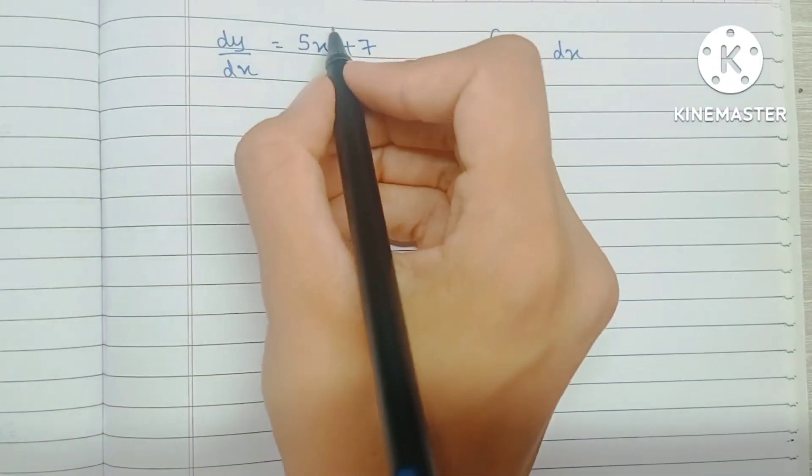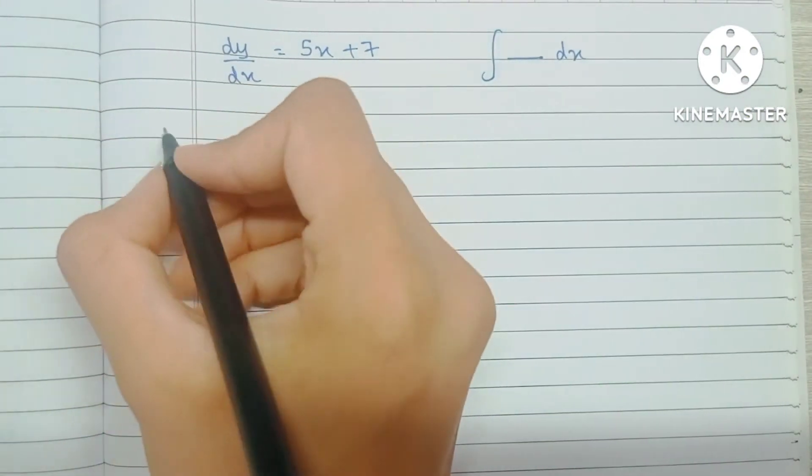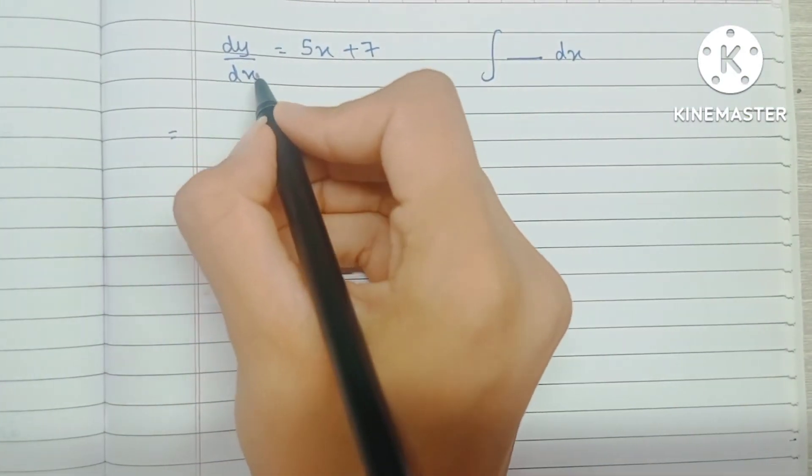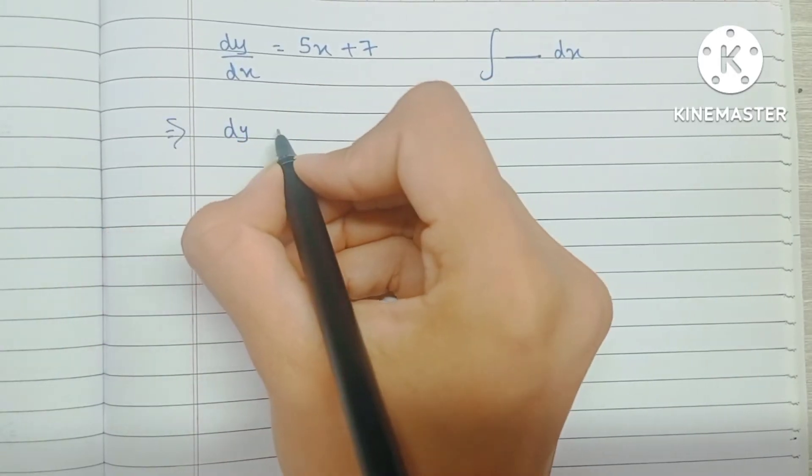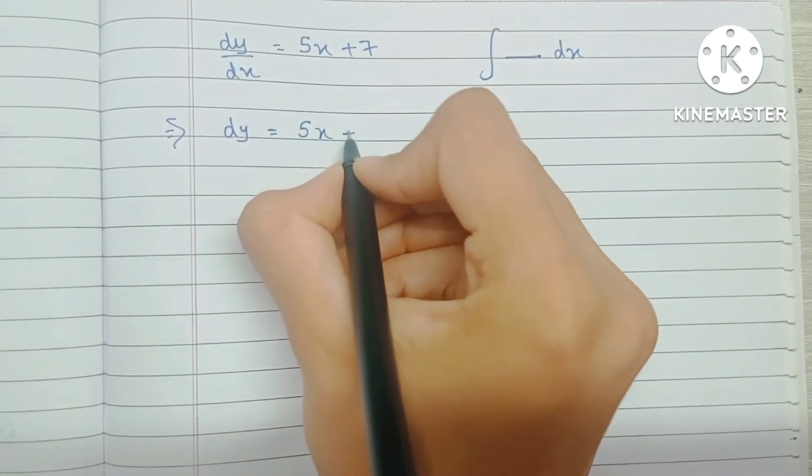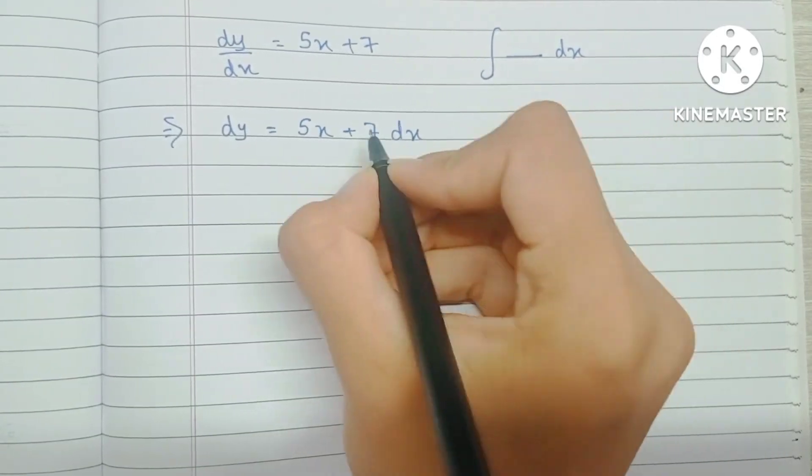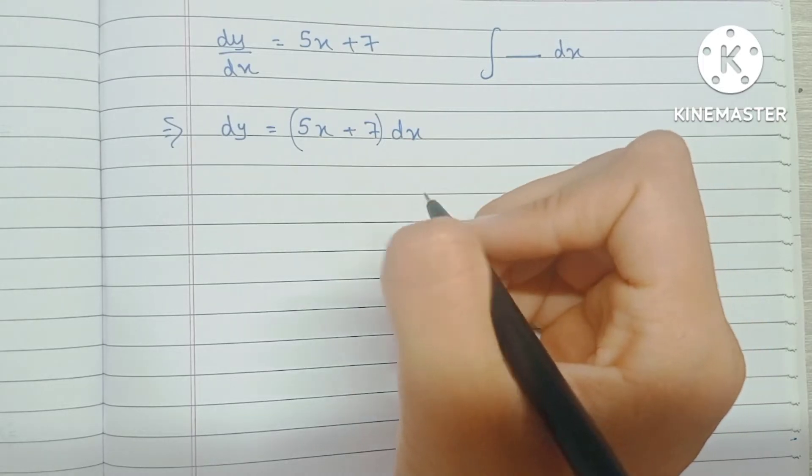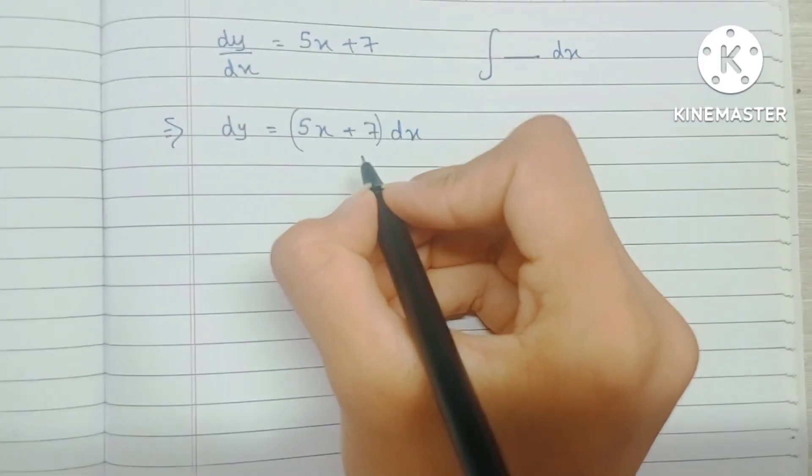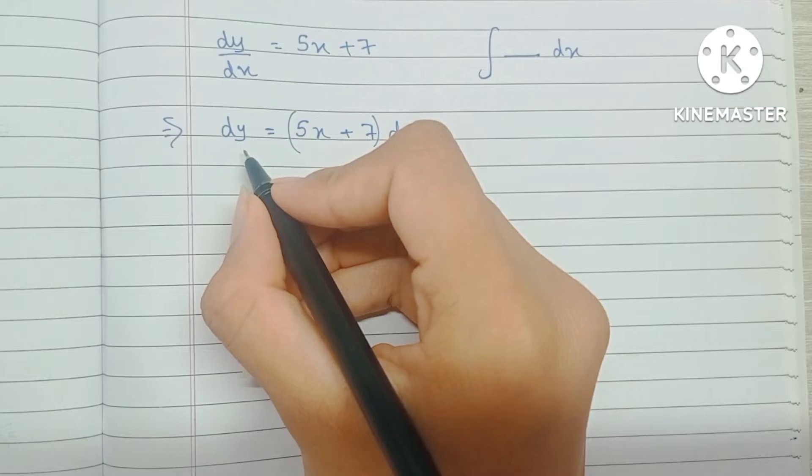So before integrating both sides of this equation, I'm going to take this dx to the right side, so we have dy equals 5x plus 7 dx. Now when I try to integrate both sides, it will actually make sense because on both sides I will know with respect to which variable I want to integrate.